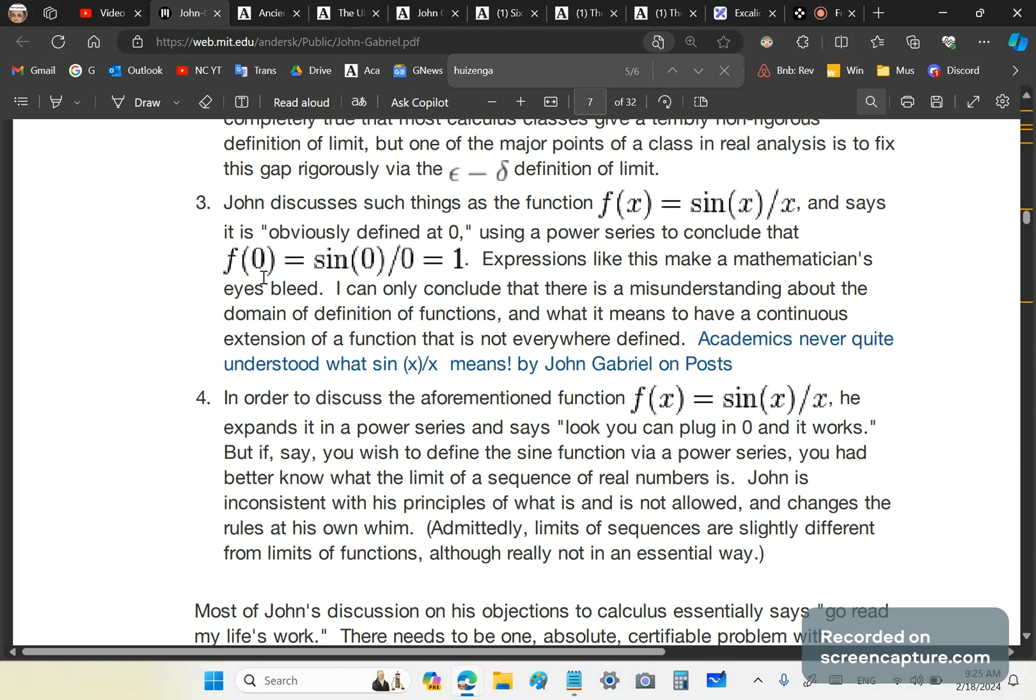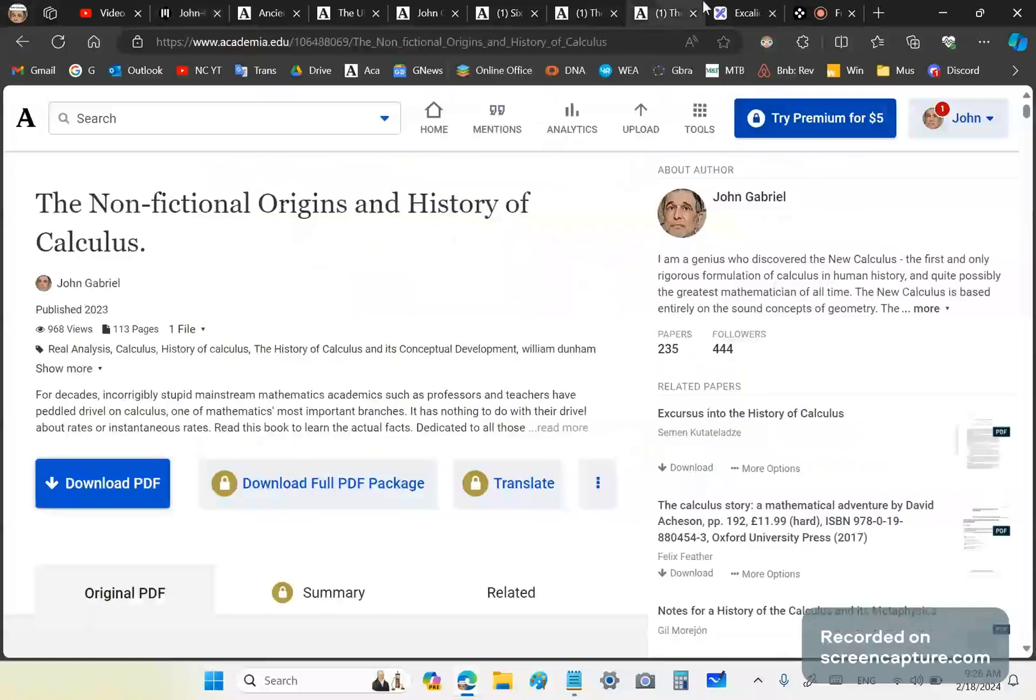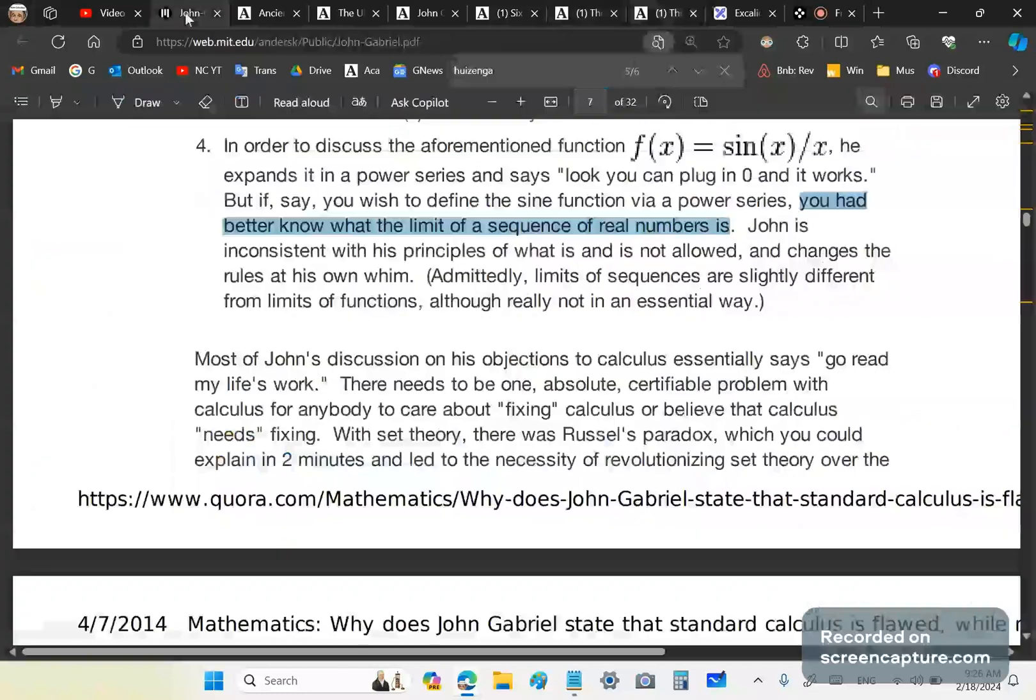So then he says, in order to discuss the aforementioned function, he expands it in a power series and says, look, you can plug in zero and it works. But if you wish to define the sine function via power series, you had better know what the limit of a sequence of real numbers is. And here we get into that bullshit theory of limits, which has no place in calculus, which I've proved in the holy grail of calculus. And which I've shown over and over again is a concept that is not needed in calculus. So he says I'm inconsistent with my principles or what is and what is not allowed. And I changed the rules at his own whim. Now, that's like Trump supporters and like Trump himself, whenever they try to accuse their followers, they say exactly what they're guilty of. And this is what the mainstream does. I mean, if you look at set theory, it's such a load of bullshit from the very first belief till the very last one.